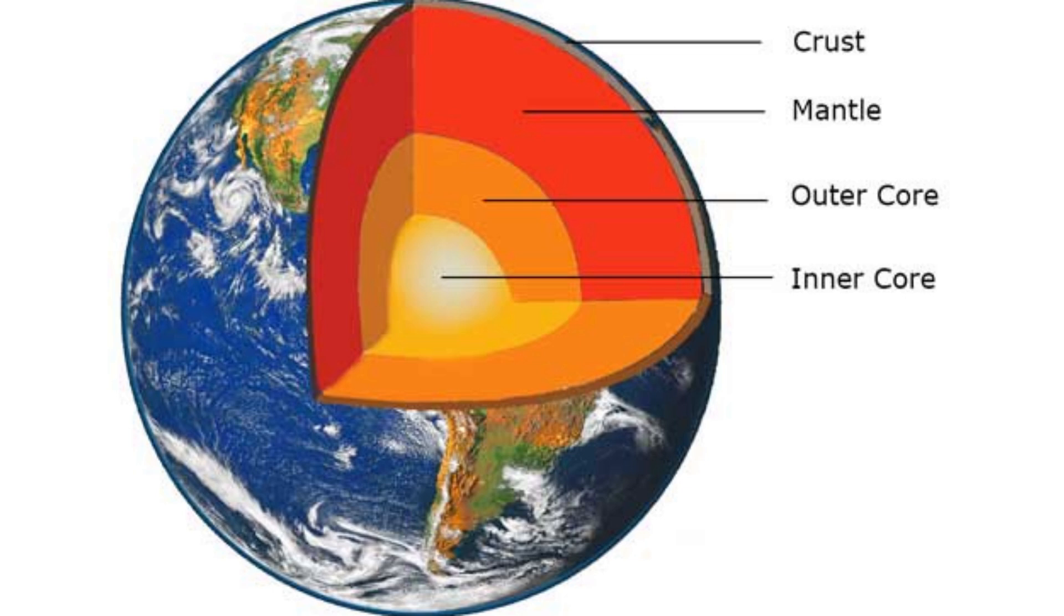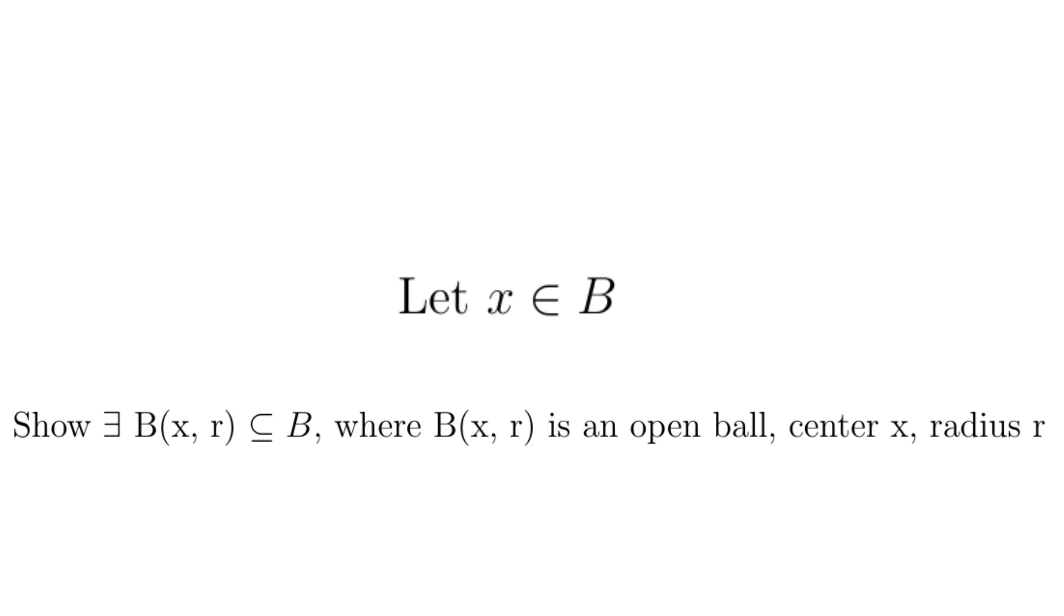Open sets have many equivalent definitions. A thing to keep in mind is that to prove a set is open, we need to pick an arbitrary point in the set, x is an element of B, and show there is an open ball with center x that doesn't go outside B. The open ball must be entirely contained inside B. If that's true, then B is open.